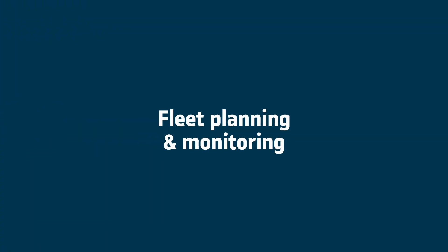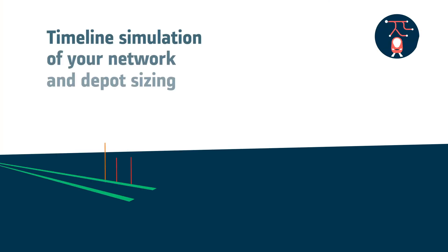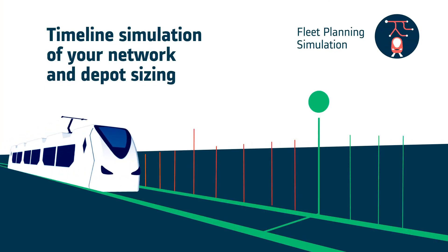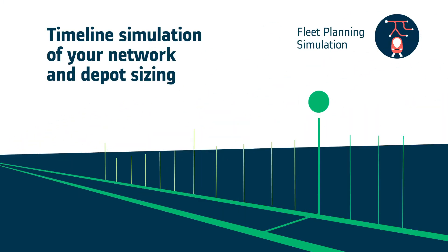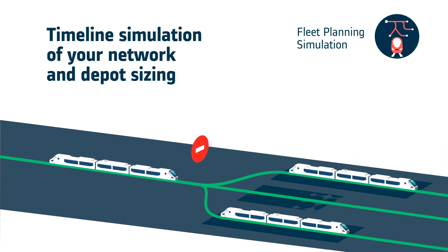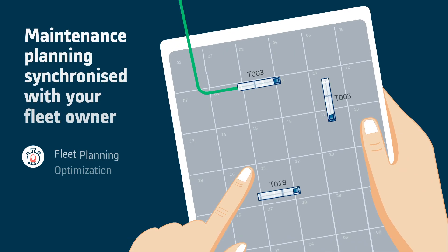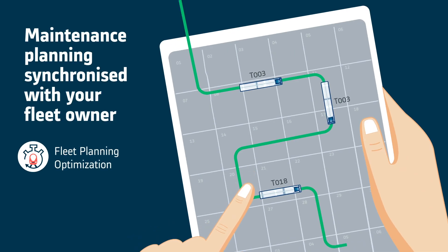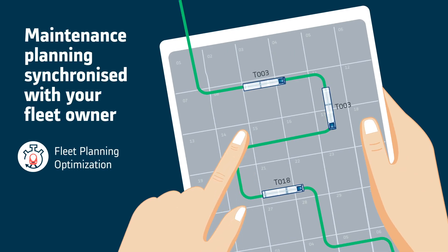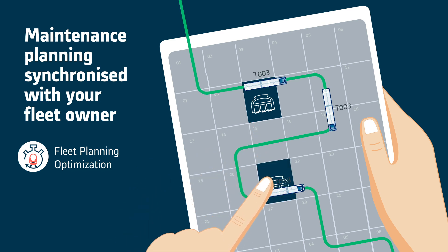Everything starts with the fleet management. Simulate your network and your maintenance depot to identify bottlenecks and optimise maintenance footprint and organisation. Optimise maintenance planning together with your fleet owner schedule for the coming days until the end of the contract.